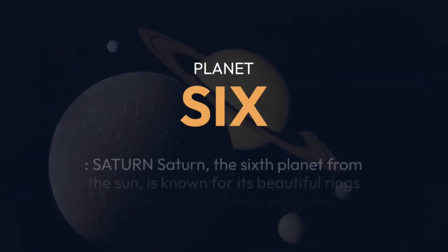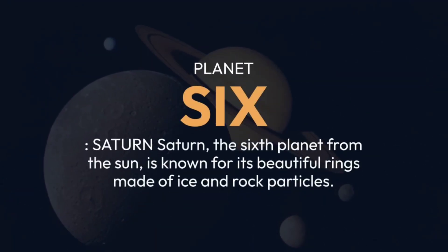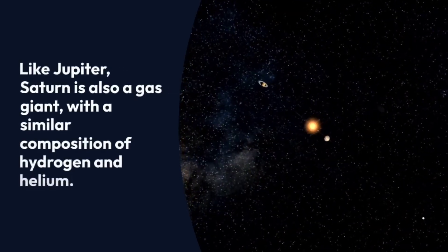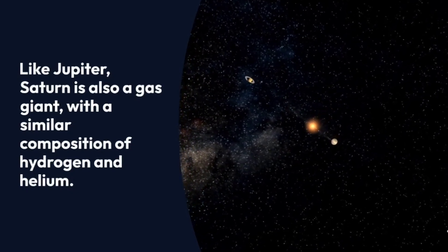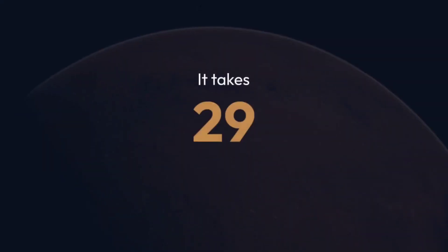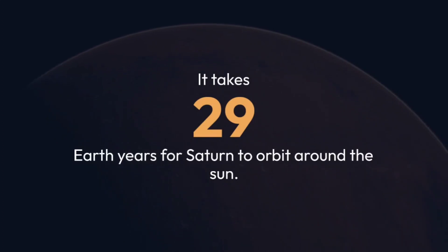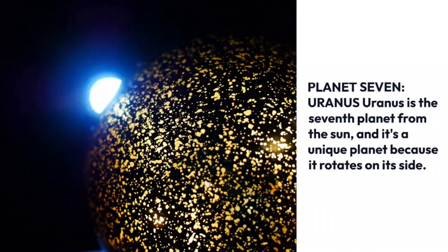Planet 6: Saturn. Saturn, the sixth planet from the sun, is known for its beautiful rings made of ice and rock particles. Like Jupiter, Saturn is also a gas giant, with a similar composition of hydrogen and helium. It takes 29 Earth years for Saturn to orbit around the sun.